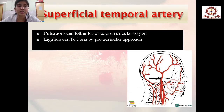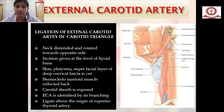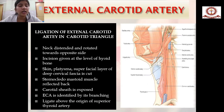For the superficial temporal artery, pulsation can be felt in the preauricular region and ligation is done by the preauricular approach. For the external carotid artery, ligation is performed in the carotid triangle with the neck extended and rotated to the opposite side. An incision is given at the level of the hyoid bone, the skin, platysma, and superficial layer of deep cervical fascia are cut, the sternocleidomastoid muscle is deflected back, and the external carotid artery is identified by its branching and ligated above the origin of the superior thyroid artery.